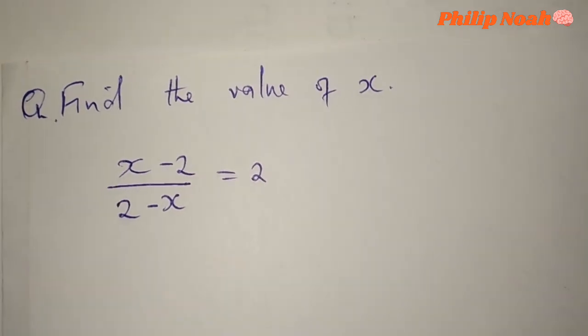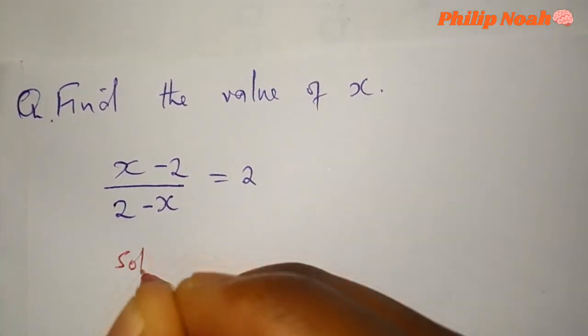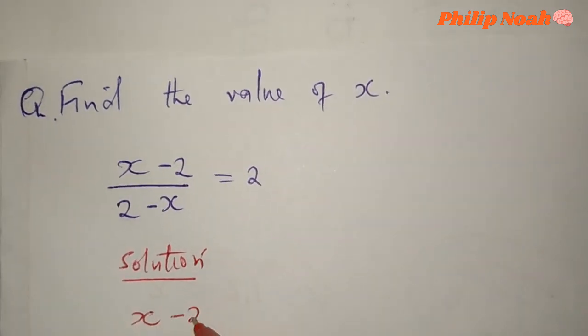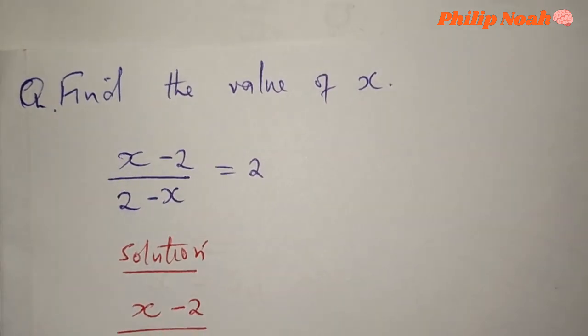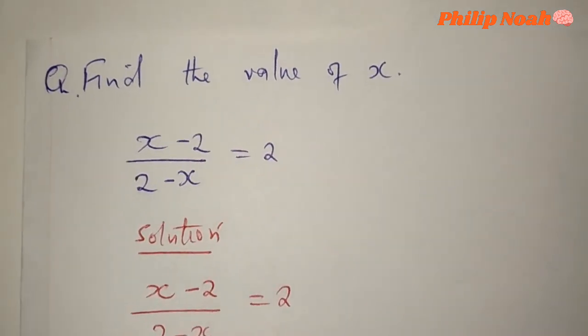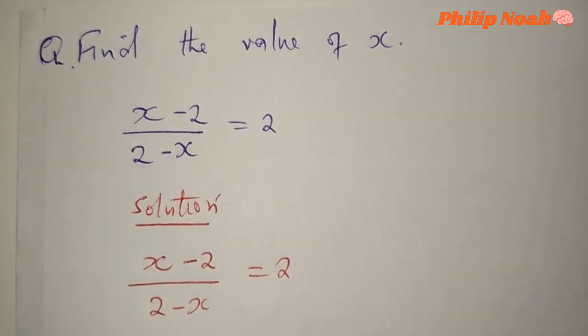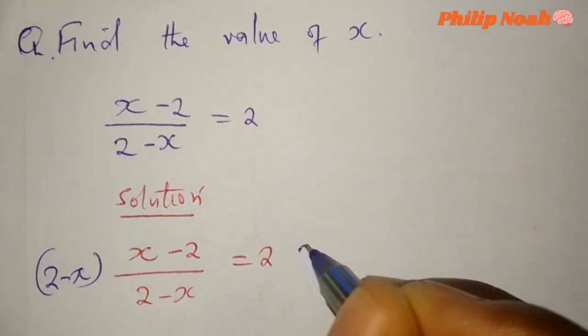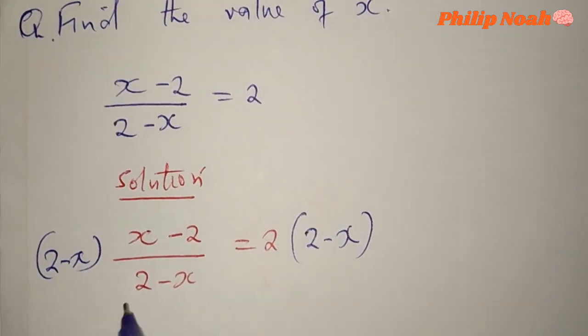Let's see the solution. So we have x minus 2 over 2 minus x equals 2. The first step, we shall multiply both sides of this equation by 2 minus x so that we get rid of 2 minus x down here.